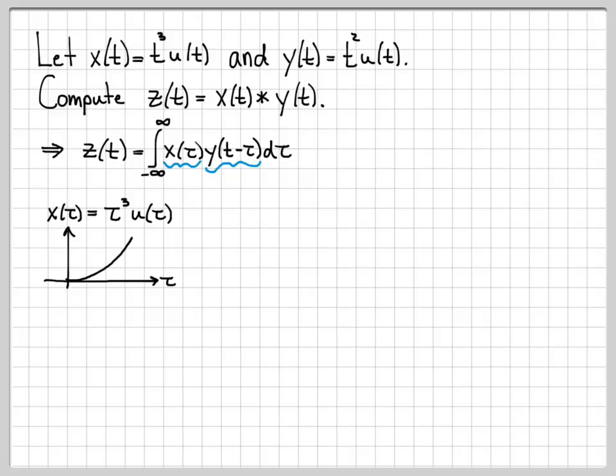This is the trickier part, and this is where people usually mess up. I need to be able to sketch what y of t minus tau looks like. So usually when I sketch this, I break it down into pieces. First of all, let's actually write out the math for what this is. What is y of t minus tau?